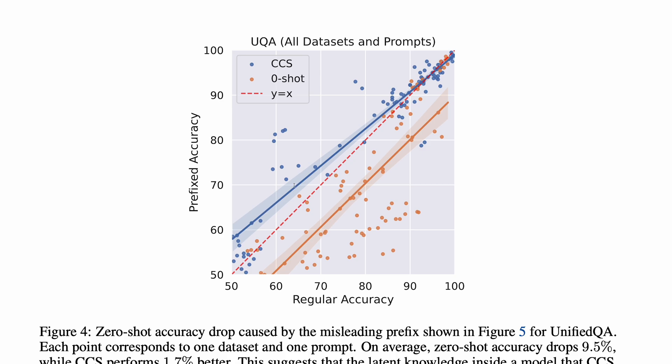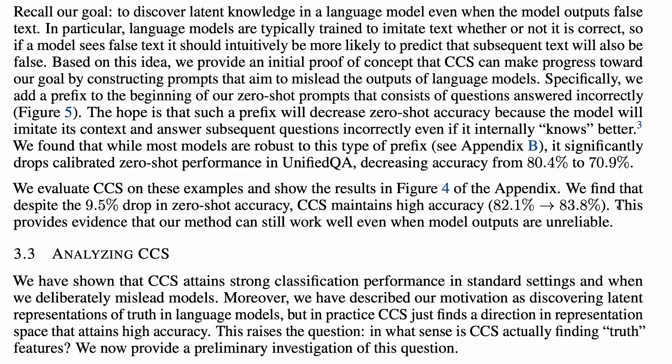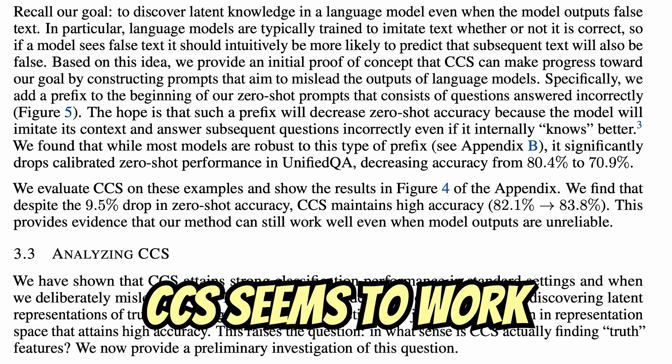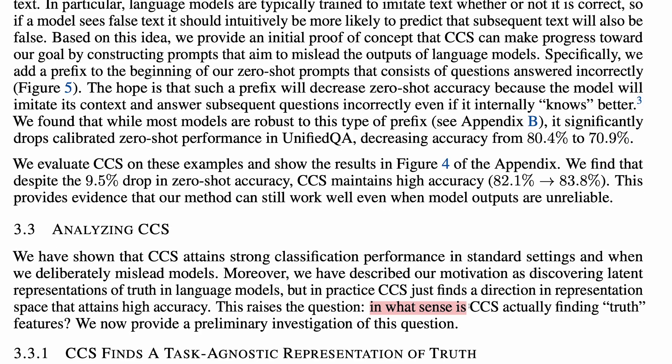By contrast, CCS on the same model performs similarly, or even slightly better when the prefix is full of falsehoods. This provides evidence that the CCS method can still work well even when the model outputs are unreliable. Okay, so CCS seems to work. But in what sense is CCS actually finding truth features? The authors poke around at this question by analyzing CCS.